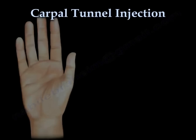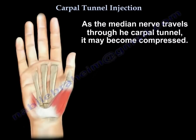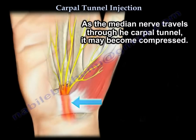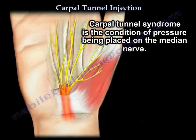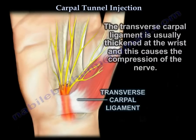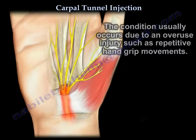Carpal Tunnel Injection. If the median nerve travels through the carpal tunnel, it may become compressed. Carpal tunnel syndrome is the condition of pressure being placed on the median nerve. The transverse carpal ligament is usually thickened at the wrist, and this causes the compression of the nerve. The condition usually occurs due to an overuse injury, such as repetitive hand grip movements.